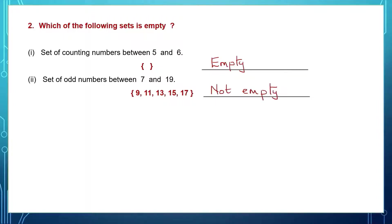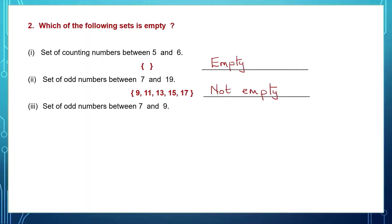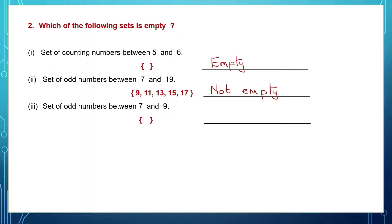Next question: set of odd numbers between 7 and 9. Between 7 and 9, we have only 8, but that's not an odd number. So that means this set has no elements in it — it is an empty set.